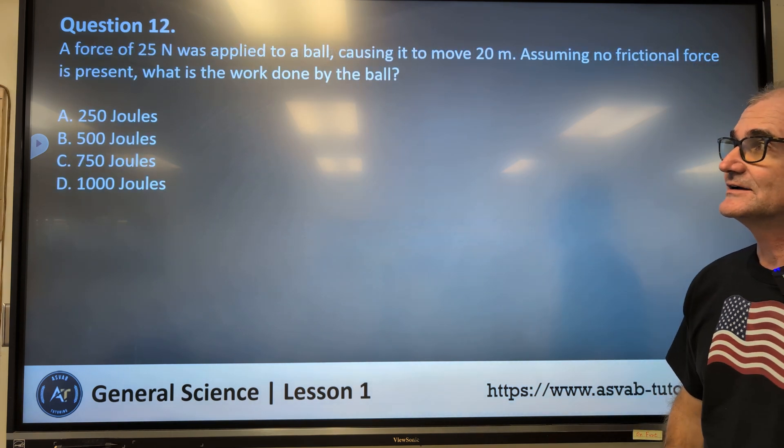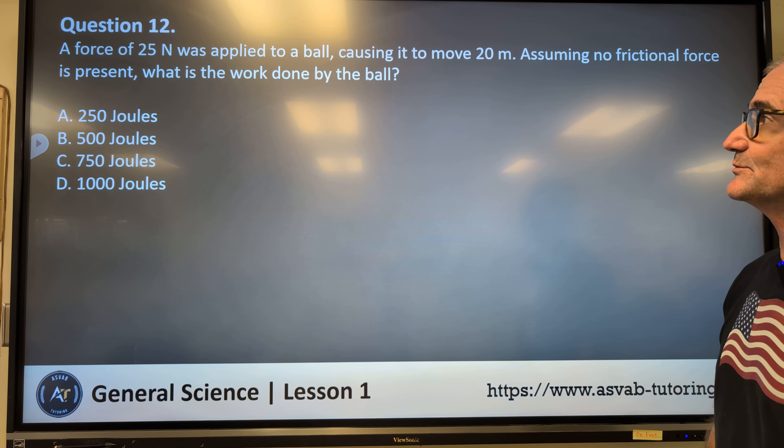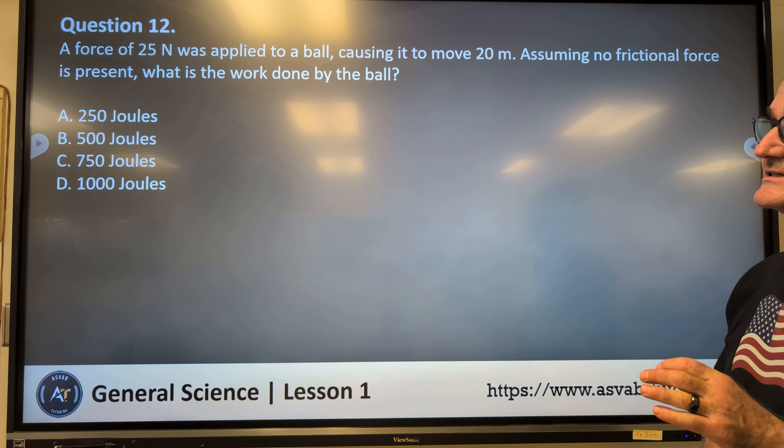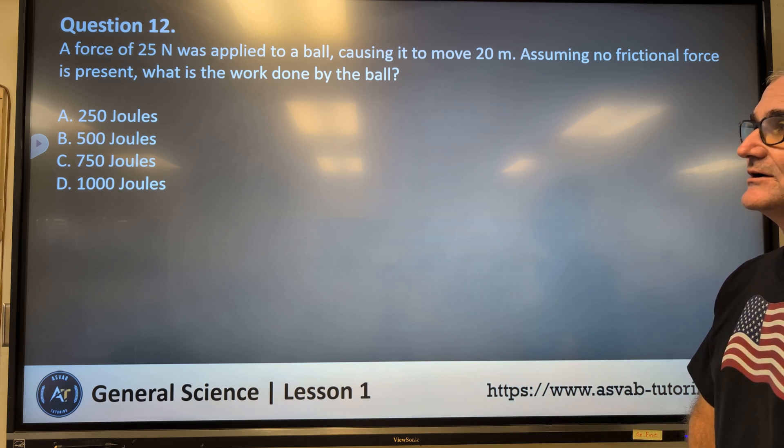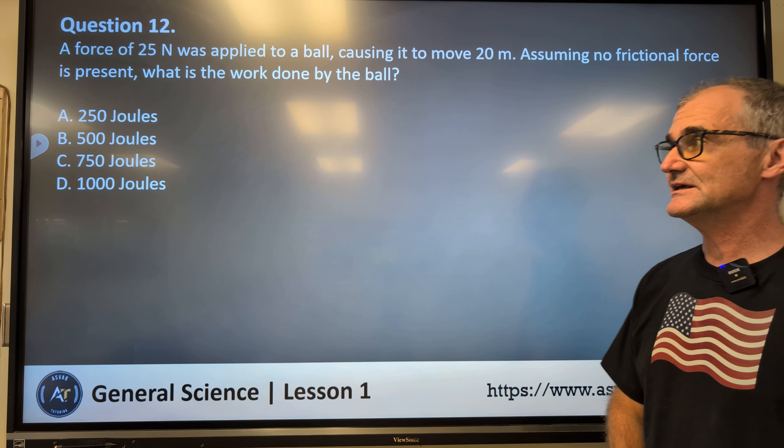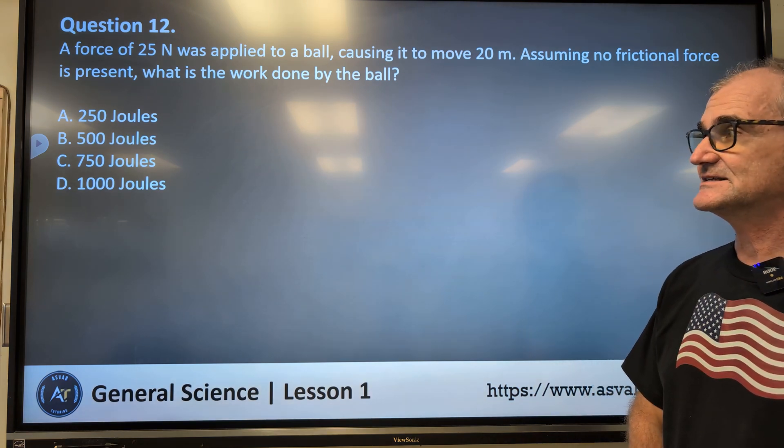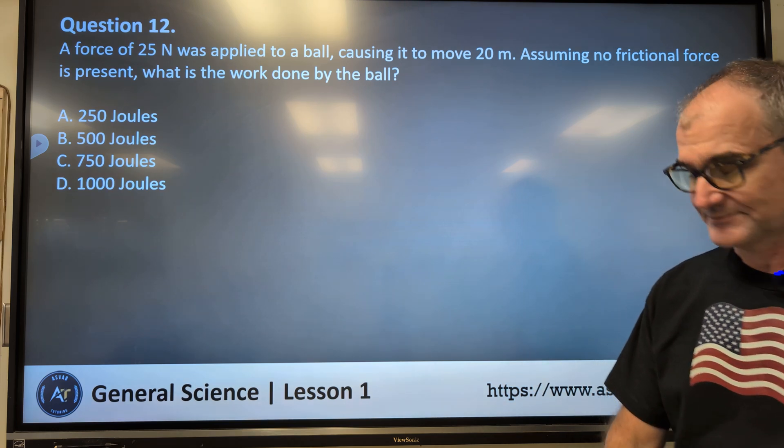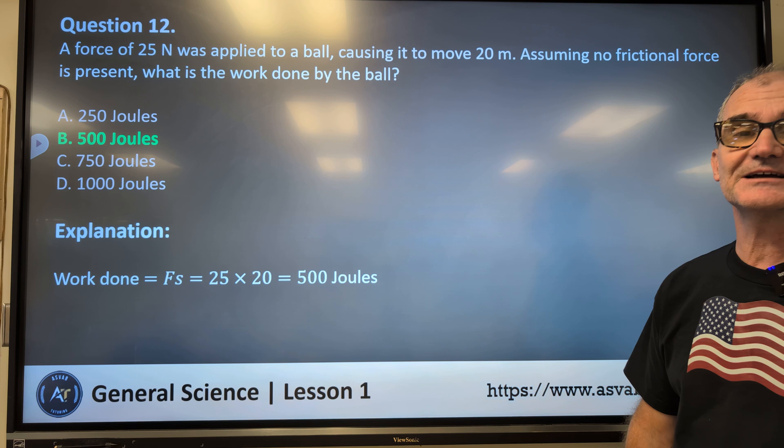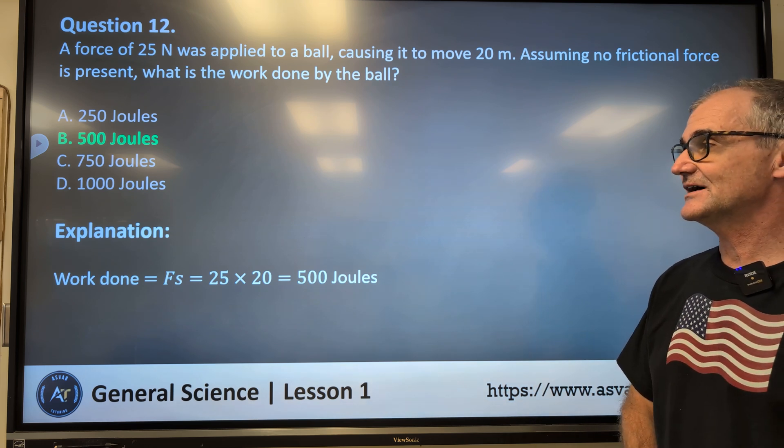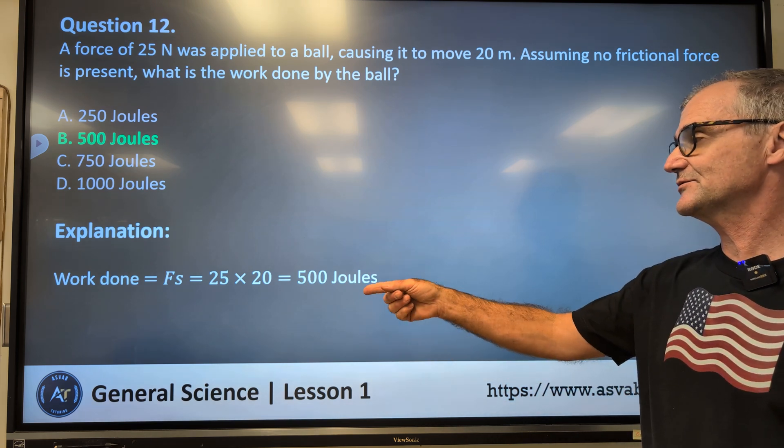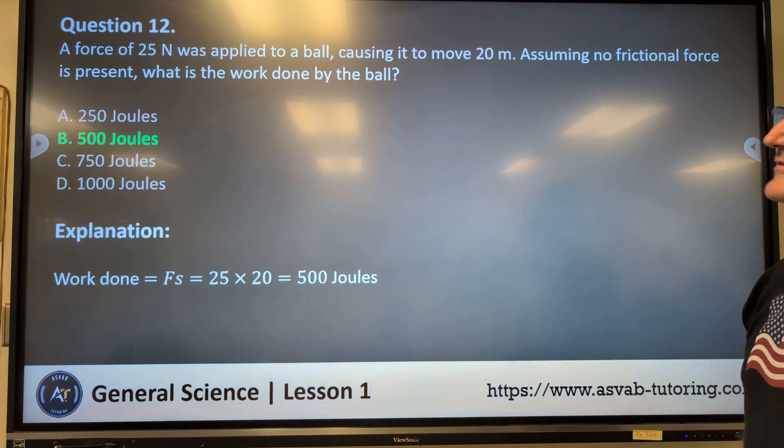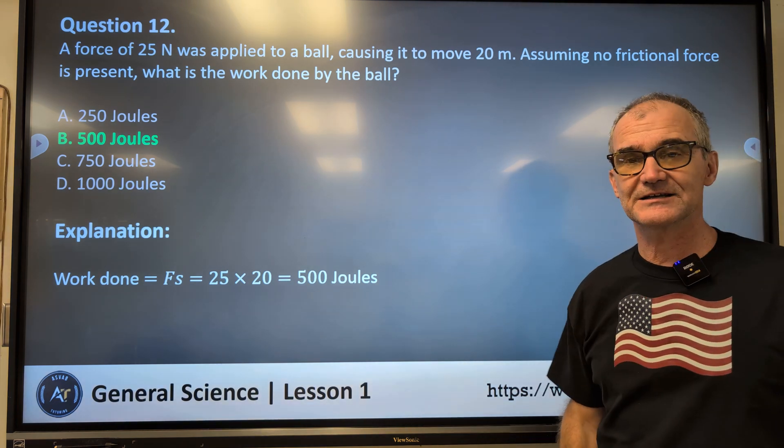Number 12. A force of 25 newtons was applied to a ball causing it to move 20 meters. Assuming no frictional force is present, what is the work done by the ball? A, 250. B, 500 joules. C, 750. D, 1,000. Pause the video, figure that out. Unpause the video. Correct answer is B, 500 joules. 25 times 20 gives you that 500. So you take the 20 meters times the 25 newtons of force, multiply them together to get 500 joules.